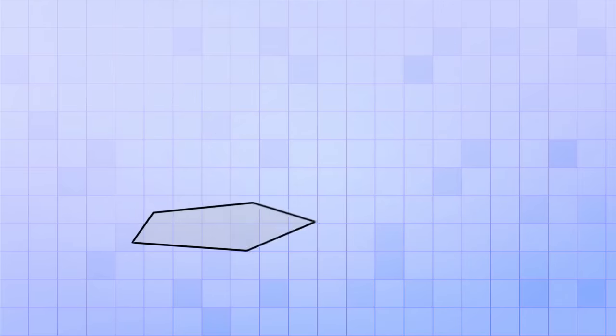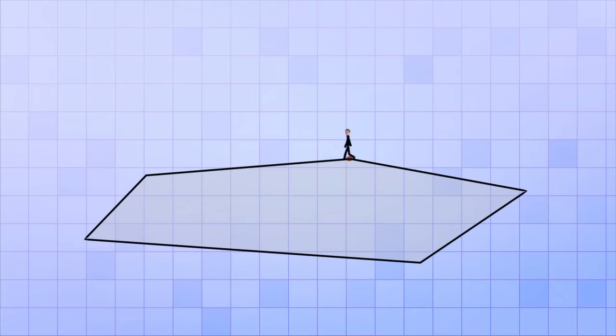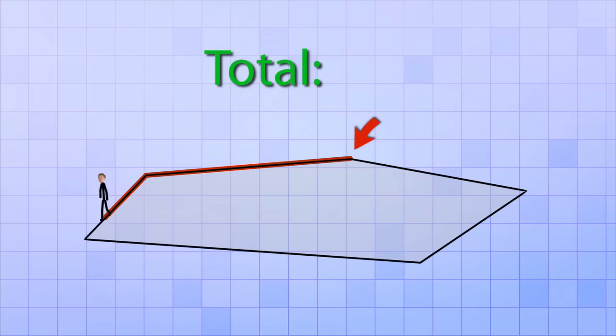A good way to see what perimeter is, is to imagine that you could walk right along the edge of a shape, like this five-sided polygon. Imagine starting at one of the polygon's vertices, and then walking along each side until you got all the way back to the point that you started from. The total distance you traveled would be the perimeter of that shape.